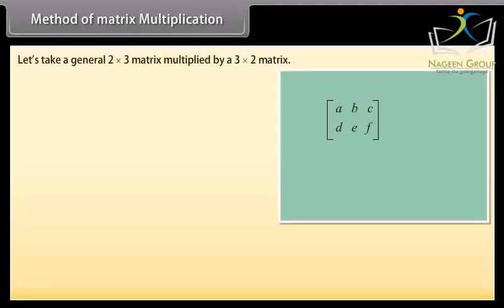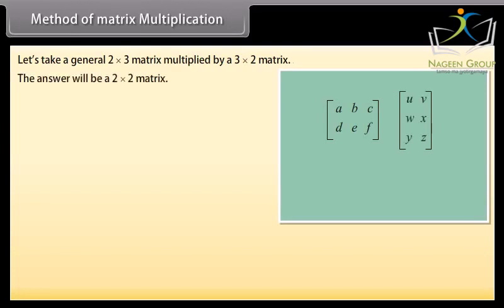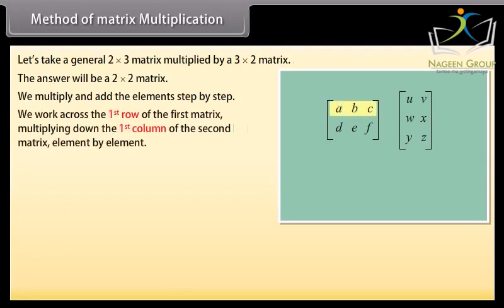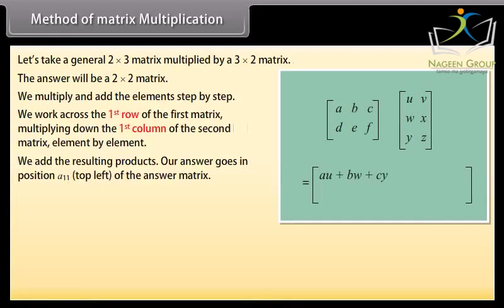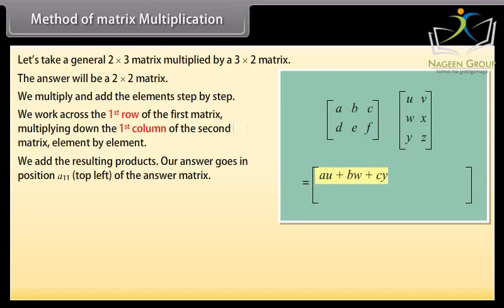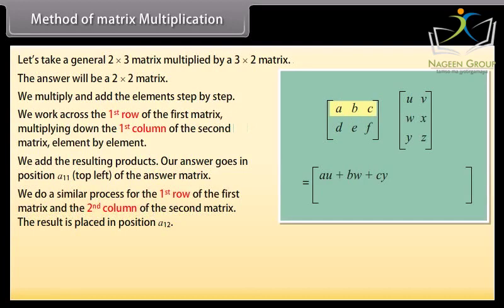Method of matrix multiplication. Let's learn the method to multiply two matrices. Take a general two-by-three matrix multiplied by a three-by-two matrix — the answer will be a two-by-two matrix. We multiply and add the elements step-by-step. We work across the first row of the first matrix, multiplying down the first column of the second matrix element-by-element, and add the resulting products. The answer goes in position A(1,1), that is top left of the answer matrix. We do a similar process for the first row of the first matrix and the second column of the second matrix; the result is placed in position A(1,2).